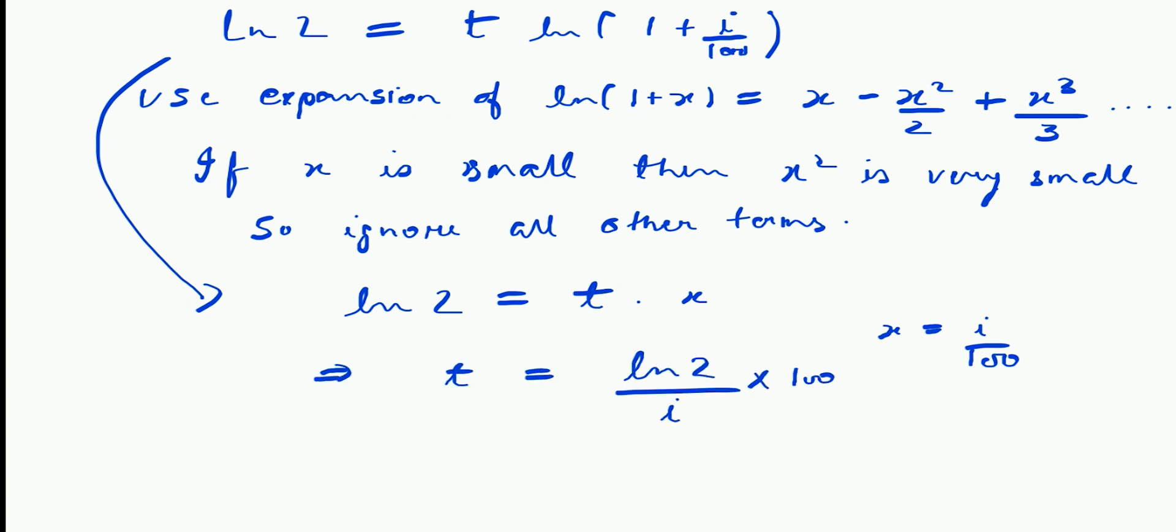Solving the equation and putting Ln2 equals 0.693, we get t equals 69.3 by i. Since 72 has lot more factors compared to 69.3 or 70, we use 72 instead. Also, 72 compensates for the approximation we did by ignoring the squared terms.